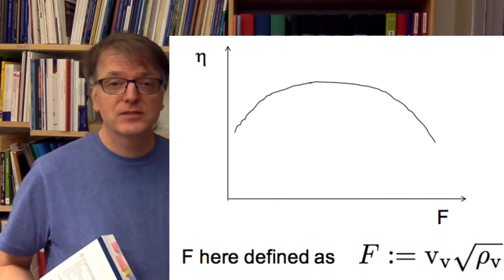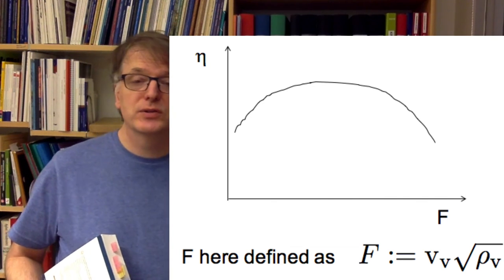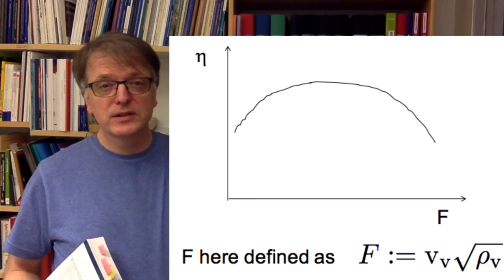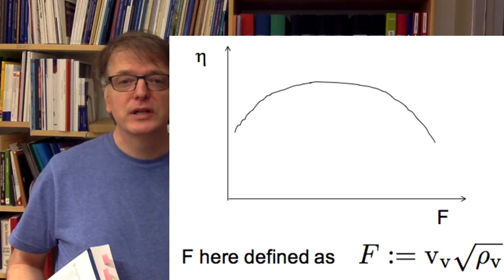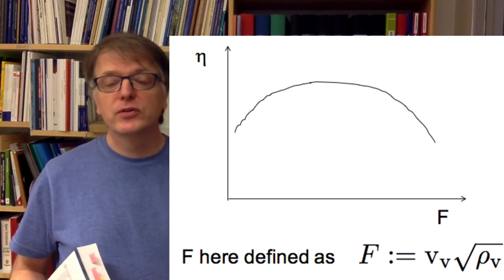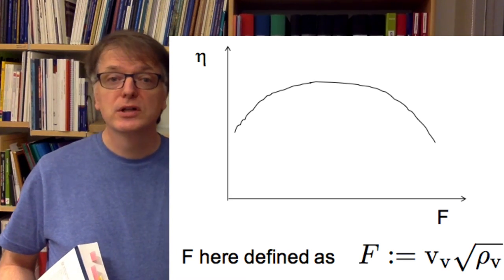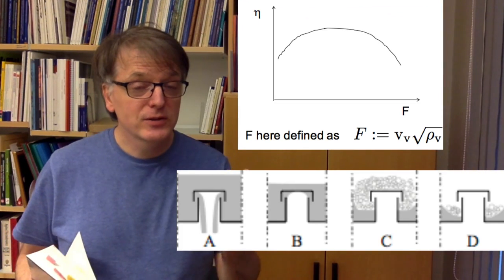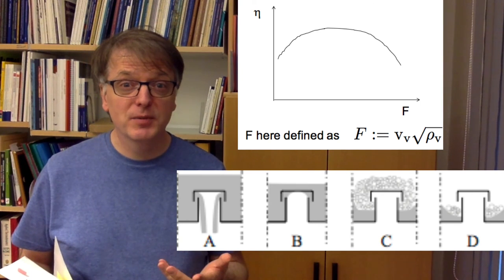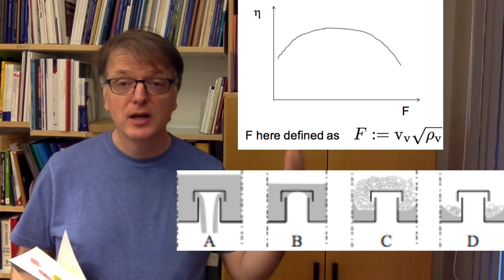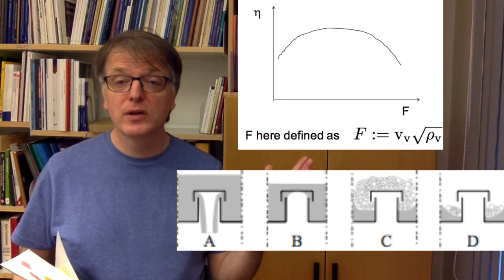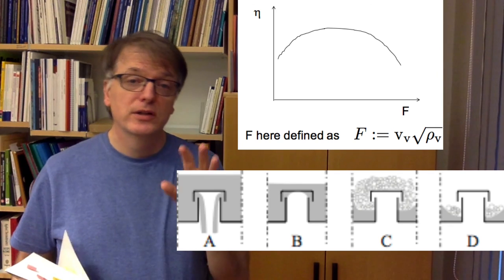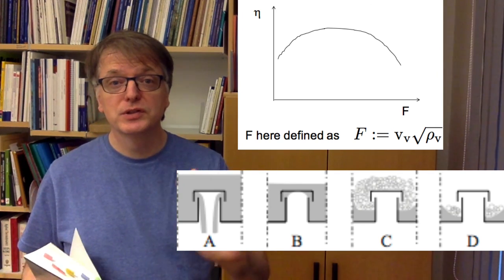So F here is the gas flux and it's a velocity times the square root of the density of the flow, and you see there is somewhere there is a maximum tray efficiency. And if you have too small or if you have too large gas flux then you get a lower tray efficiency, which is consistent with what we said before with the bubble cap trays where if you have too small gas flux then water takes the wrong way and if you have too large then the gas flux pushes the liquid away.